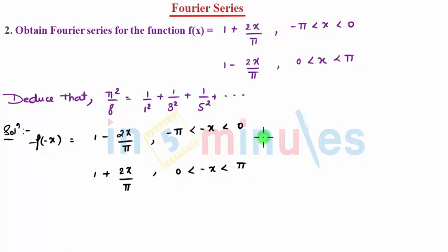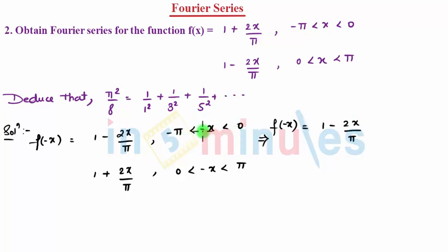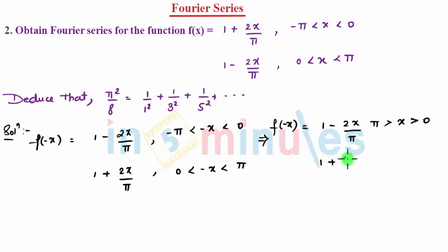So f of minus x can be written as: 1 minus 2x by pi for the first piece. Since it is minus, minus and minus will cancel, but the inequality sign will be changing. So I can say pi greater than x greater than 0. And for the second piece, 1 plus 2x by pi, where again the inequality sign changes, giving 0 greater than x greater than minus pi.